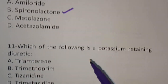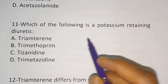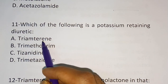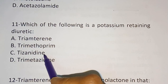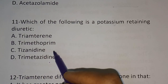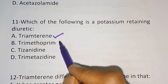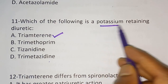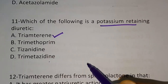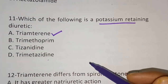Question number eleven: Which of the following is a potassium-retaining diuretic? Options are triamterene, trimethoprim, tizanidine, trimetazidine. The correct answer is triamterene. Triamterene, amiloride, and spironolactone are all potassium-retaining diuretics. We will see this classification at the end of this video after the MCQs are done.